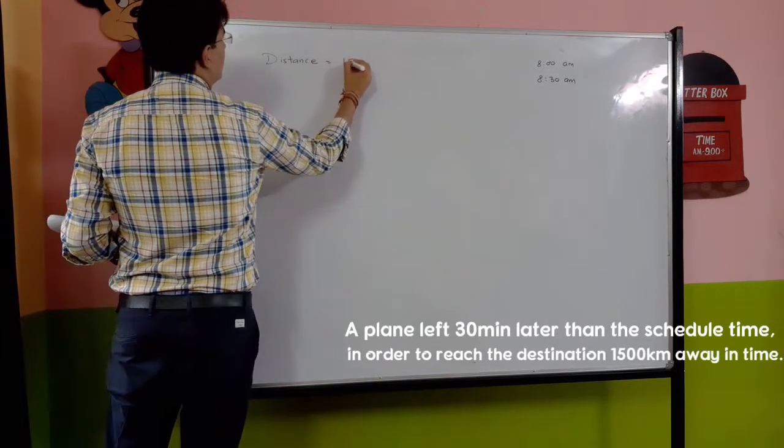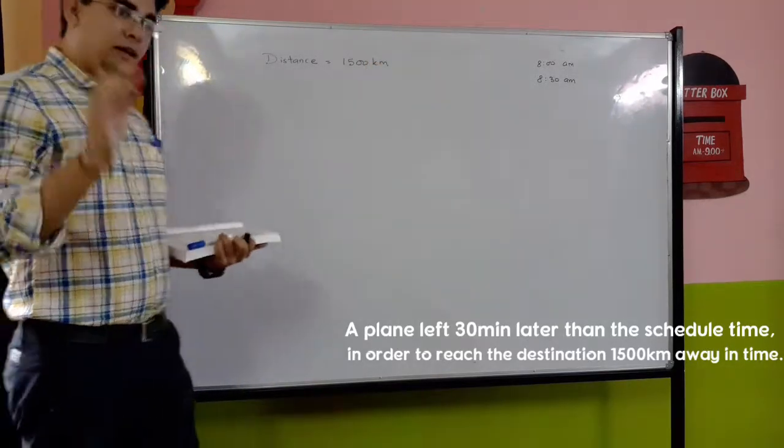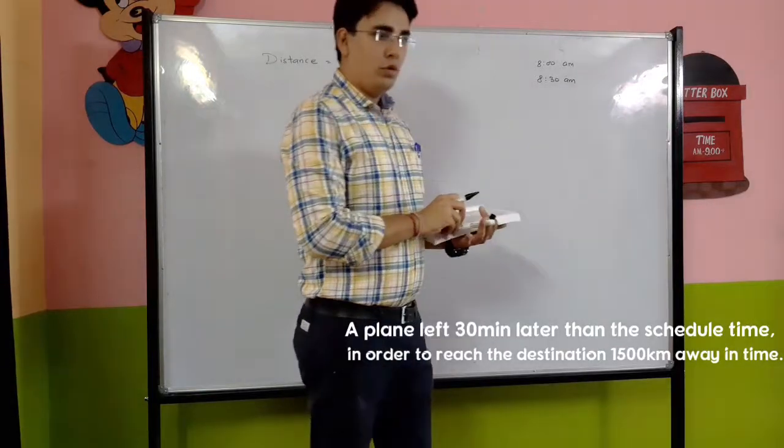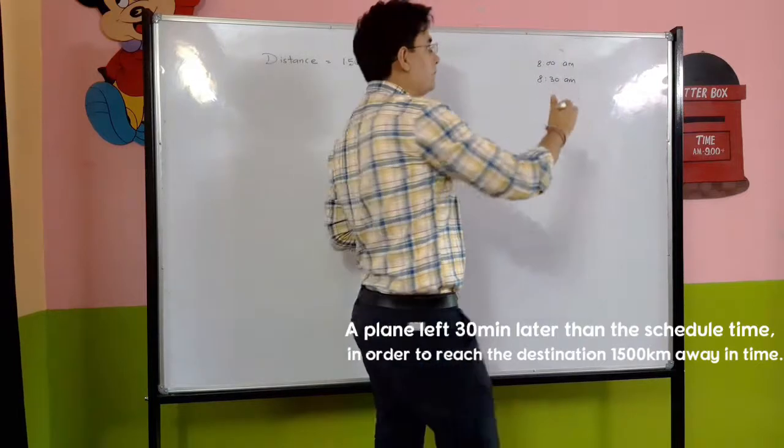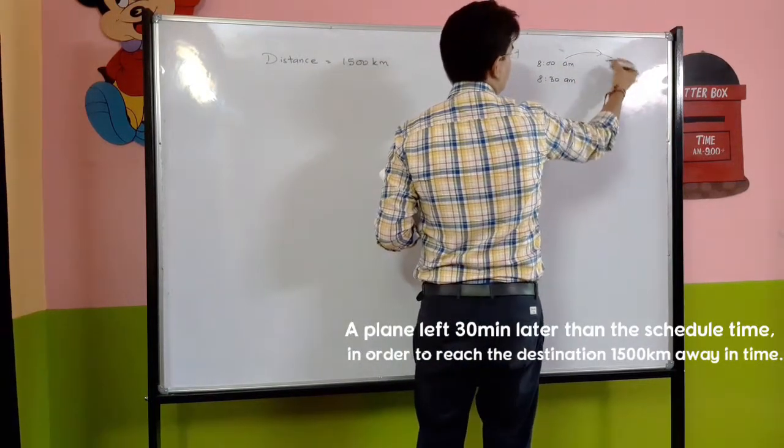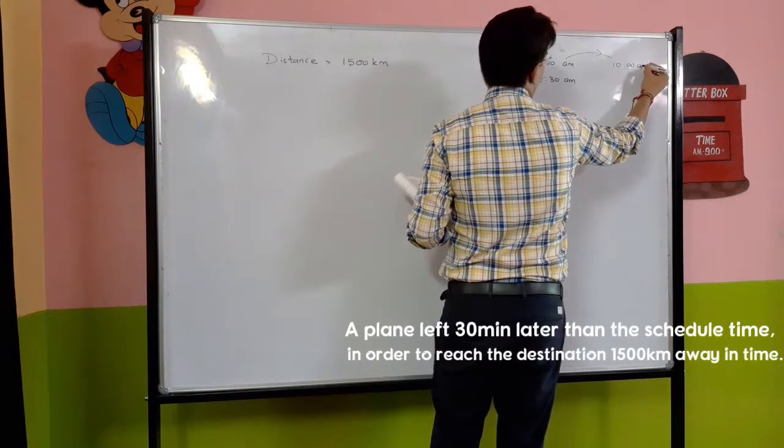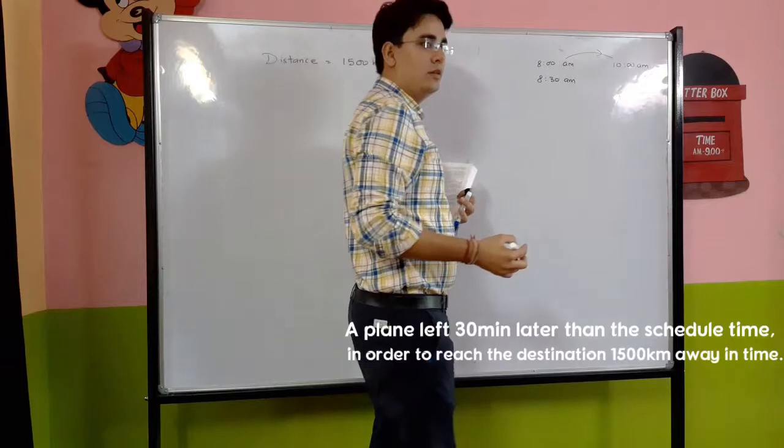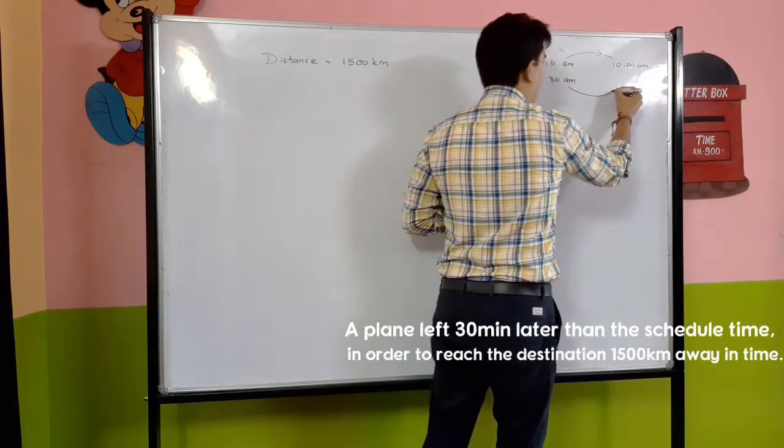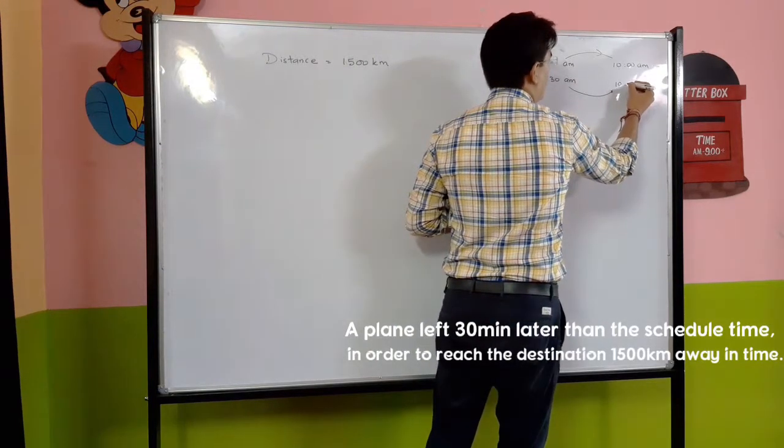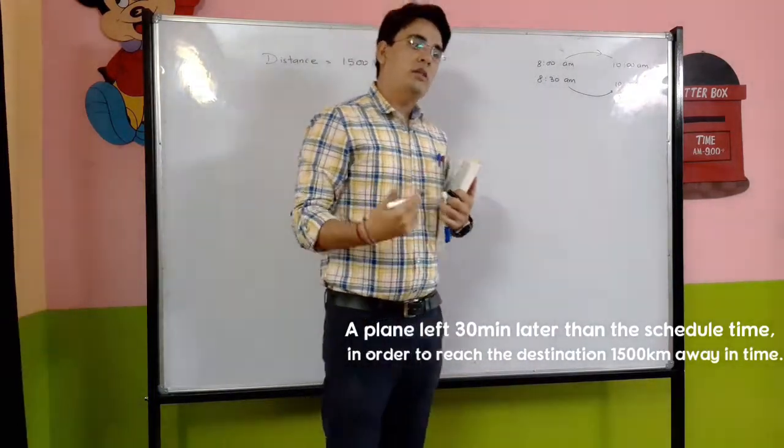Distance is 1500. In time - that means suppose at 8 am a plane leaves and reaches the destination at 10 pm. Right? But the same plane leaves half an hour late but still manages to reach at 10 pm. What has changed?